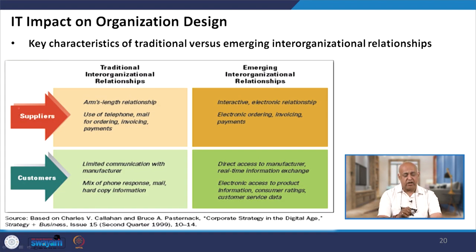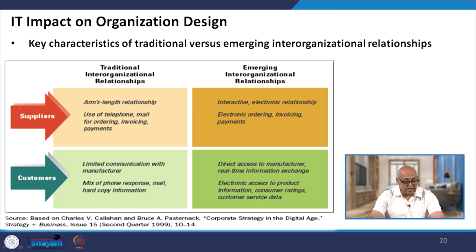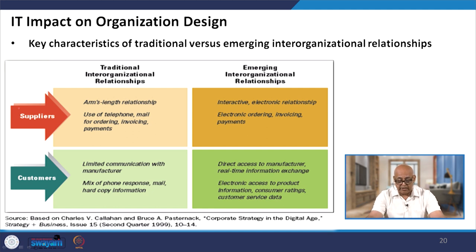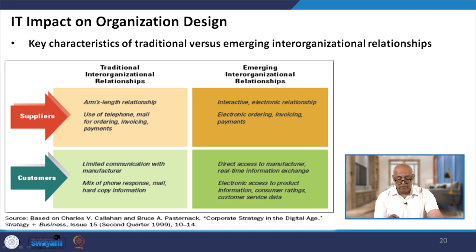The key characteristics of traditional versus emerging inter-organizational relationships show that traditional organizations had arm's-length relationships with suppliers, using telephone and mail for ordering, invoicing, and payments. Emerging inter-organizational relationships feature interactive electronic relationships, electronic ordering, invoicing, and payments. For customers, traditional relationships involved limited communication with manufacturers and a mix of phone, mail, and hard-copy information, whereas emerging relationships offer direct access to manufacturer real-time information, electronic access to product information, consumer ratings, and customer service data.